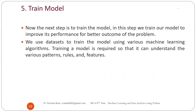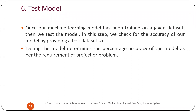After analysis, you have decided on the model. Now you have to train the machine. By training, you actually feed the data — we use datasets to train the model using various machine learning models. Training a model is required so that it can understand the various patterns, rules, and features available in your dataset. Once the model has been trained, you are ready to test it. In the testing step, we check the output's accuracy by giving it a test dataset. Testing the model determines the percentage accuracy — maybe the output is 100% accurate, or maybe 98% accurate.